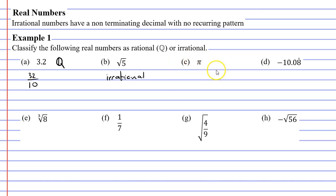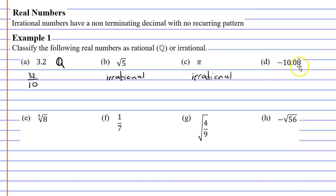Question C: we've already mentioned that pi is an irrational number because it has a non-terminating decimal — a decimal that goes on forever. So we're going to write irrational. Moving on to question D: we have a non-terminating decimal, a decimal that goes on forever, but we have a recurring pattern. And if there is a recurring pattern, then it's not irrational — so this one has to be rational. We'll put down Q.